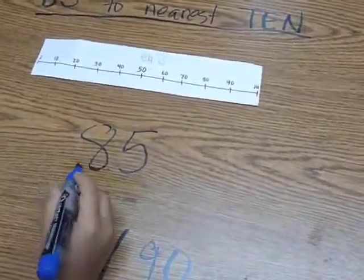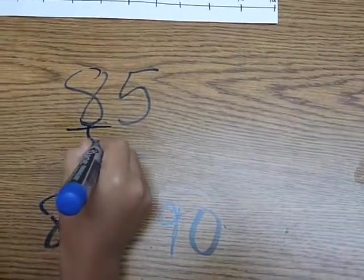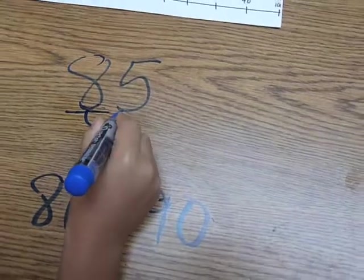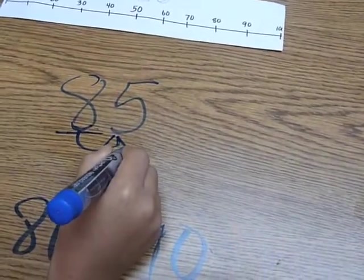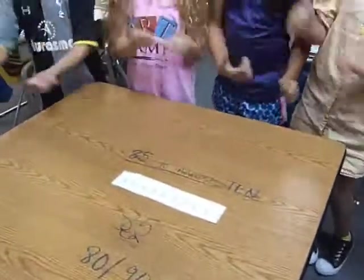Or we can do it with numbers. Underline the 10th place and draw an arrow to your neighbor. If the neighbor next door is 5 or more, round up! Round up to 90.